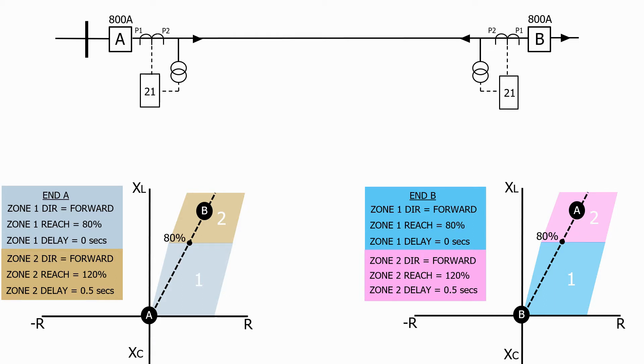To overcome the issue we had before of delayed tripping for a fault in the first and last 20% of the feeder, we provide communication between the two impedance relays. Let's now see how this works.